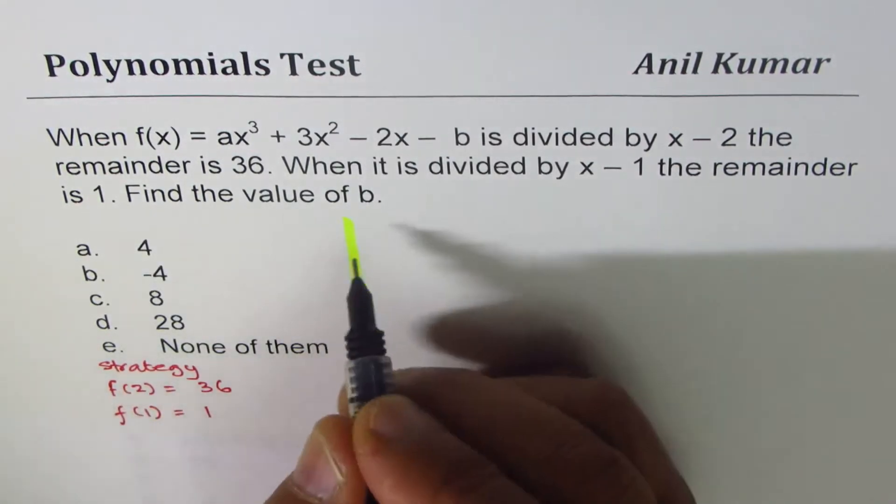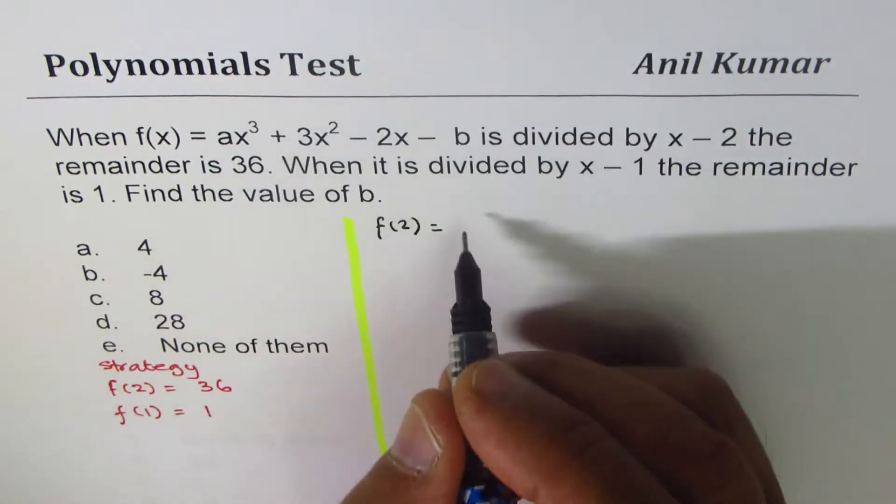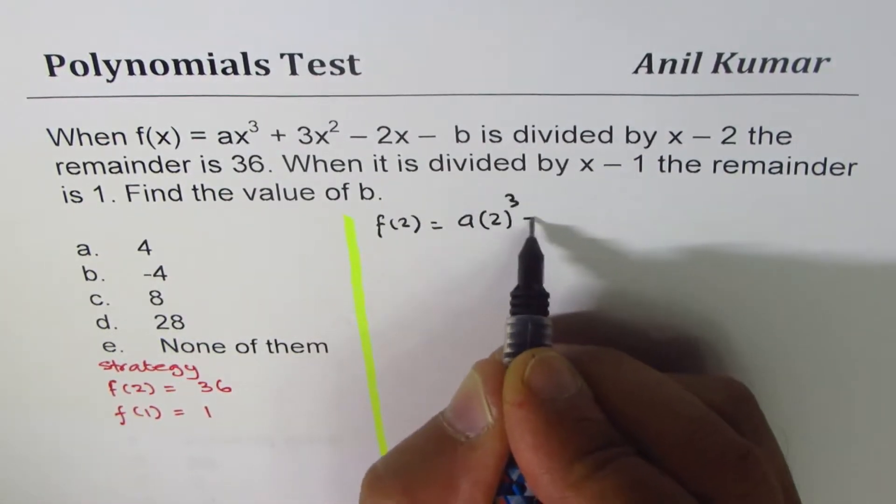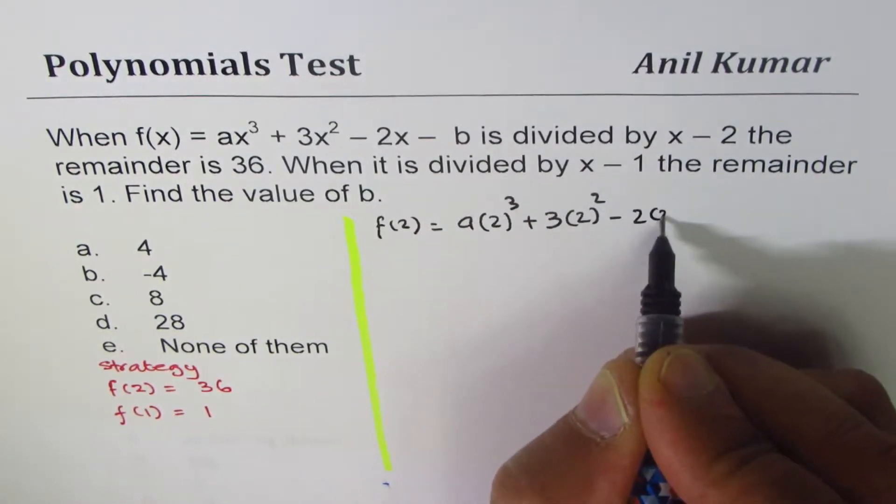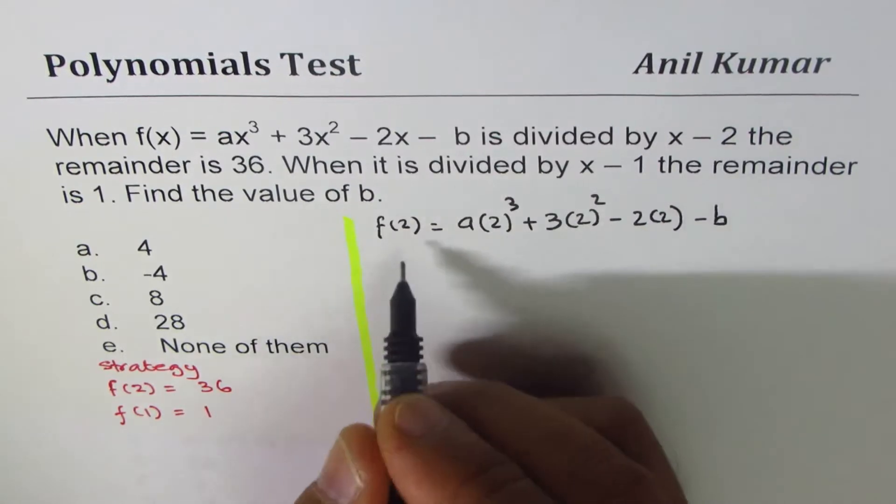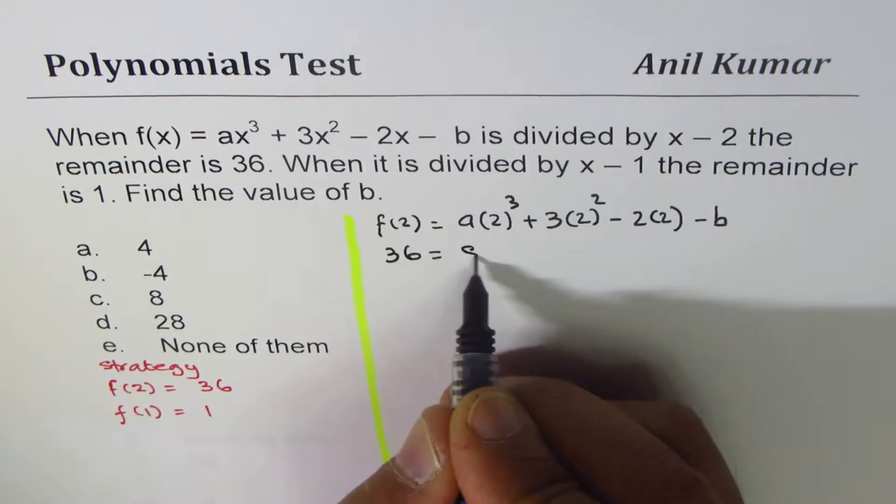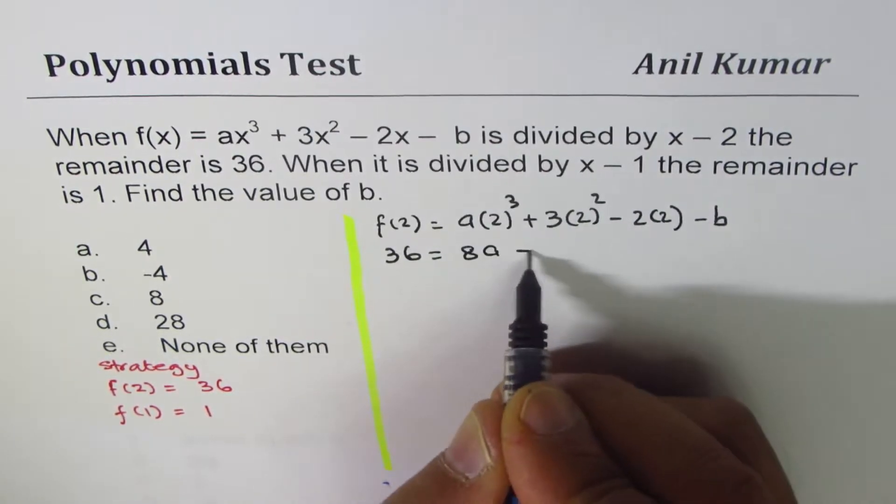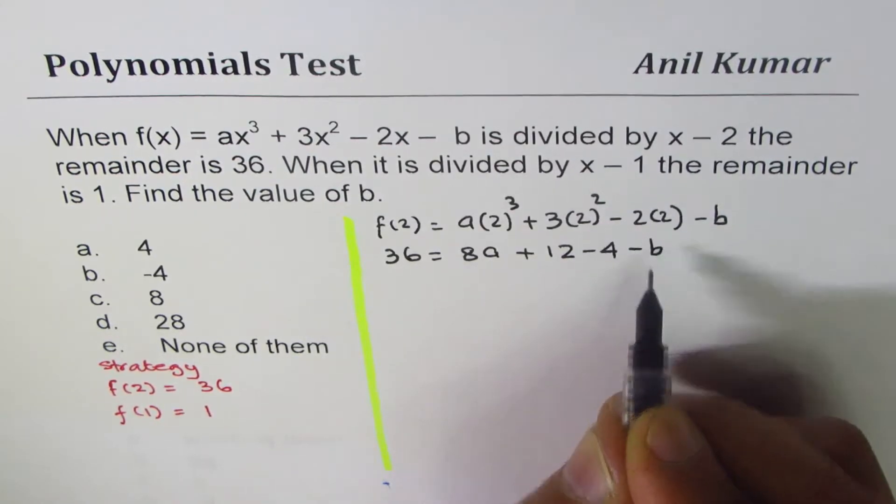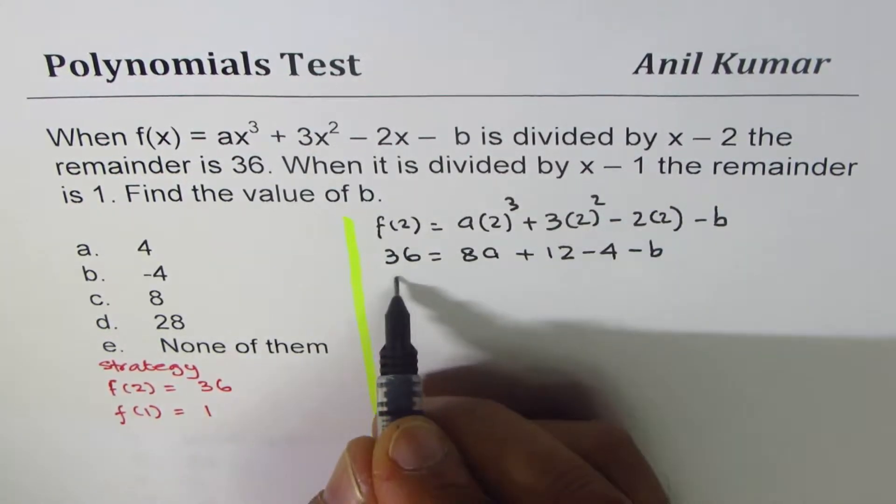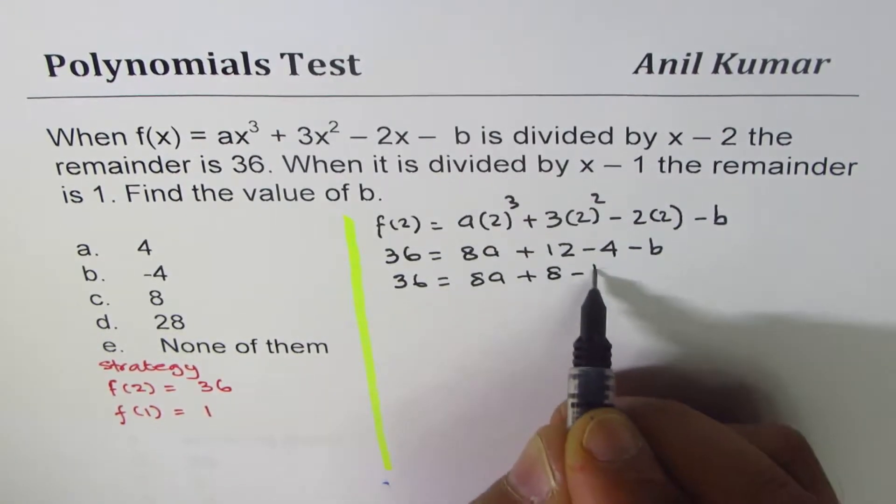So let's figure out what f(2) equals. f(2) = a(2)³ + 3(2)² - 2(2) - b. Since f(2) is 36, we replace this by 36. 2³ is 8, so we get 8a plus 12 minus 4 minus b. Therefore, 36 = 8a + 8 - b.